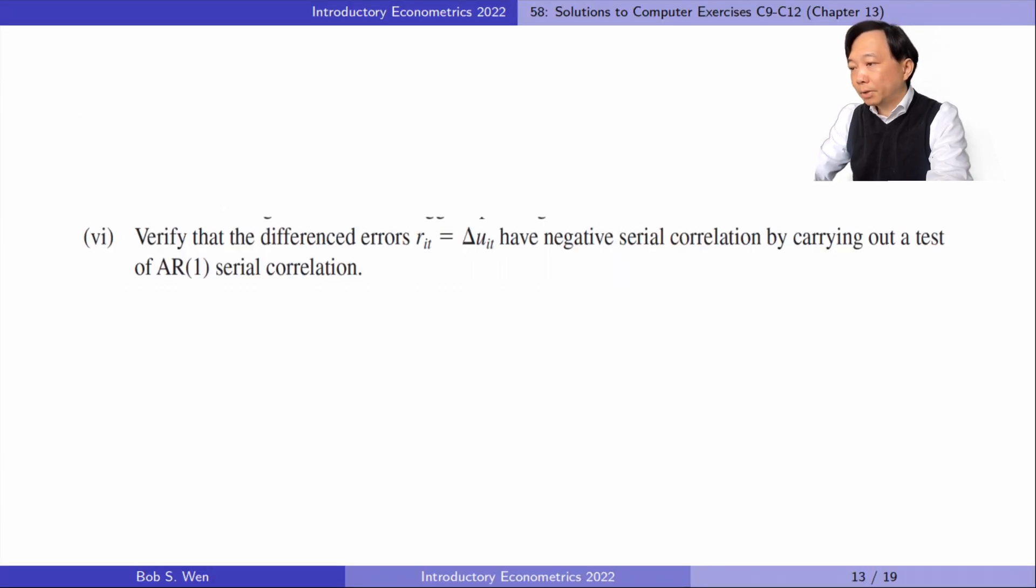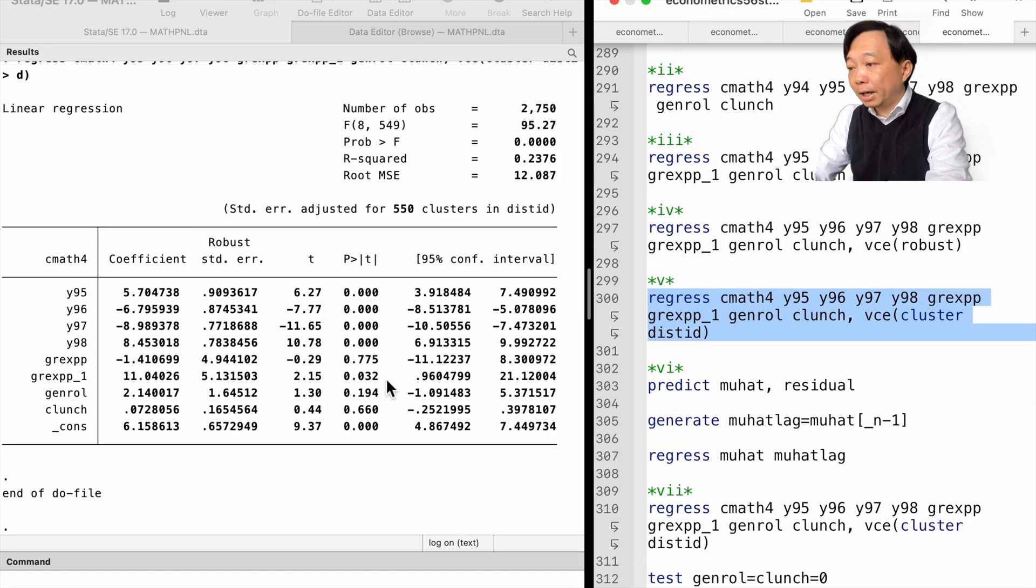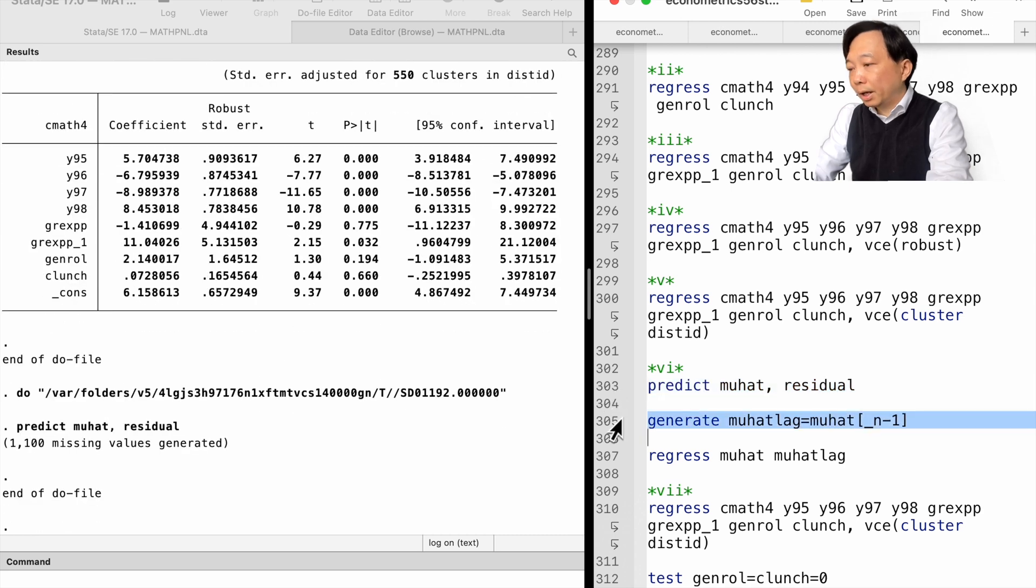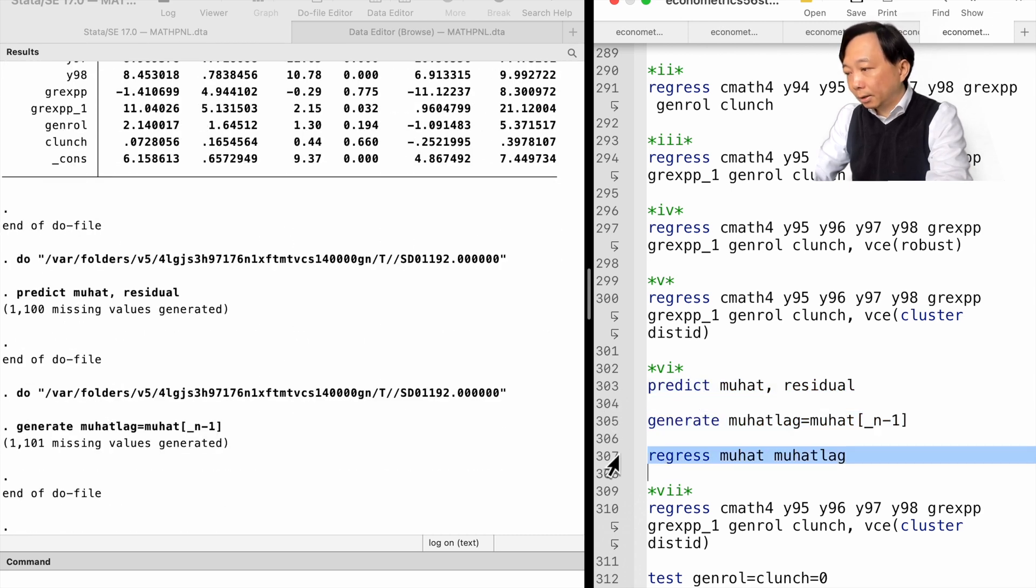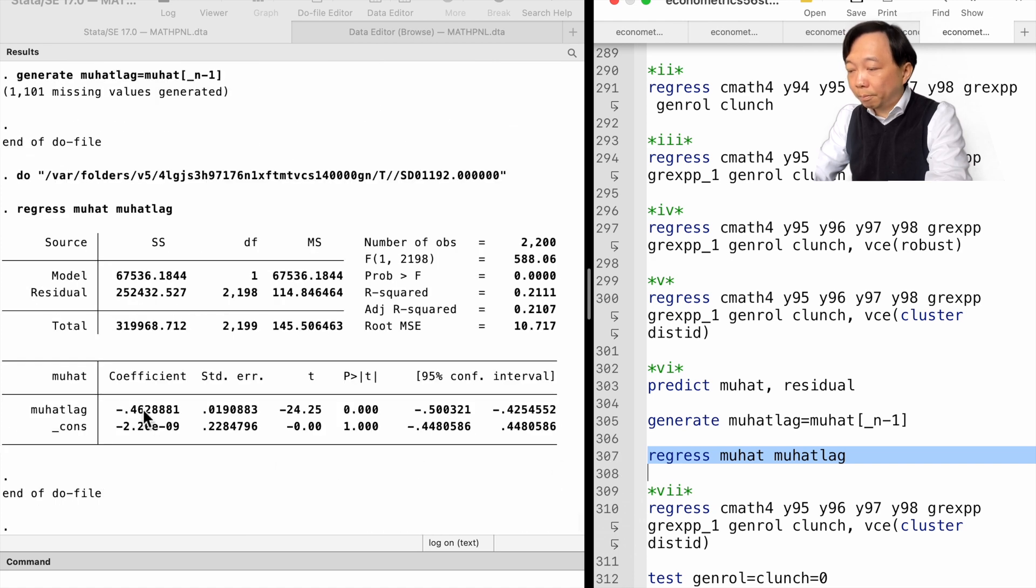In part 6, we verify that the differenced errors have negative serial correlation by carrying out a test of AR1 serial correlation. We regress the differenced error on its lag and get a slope coefficient of minus 0.46, which is strong evidence of serial correlation.